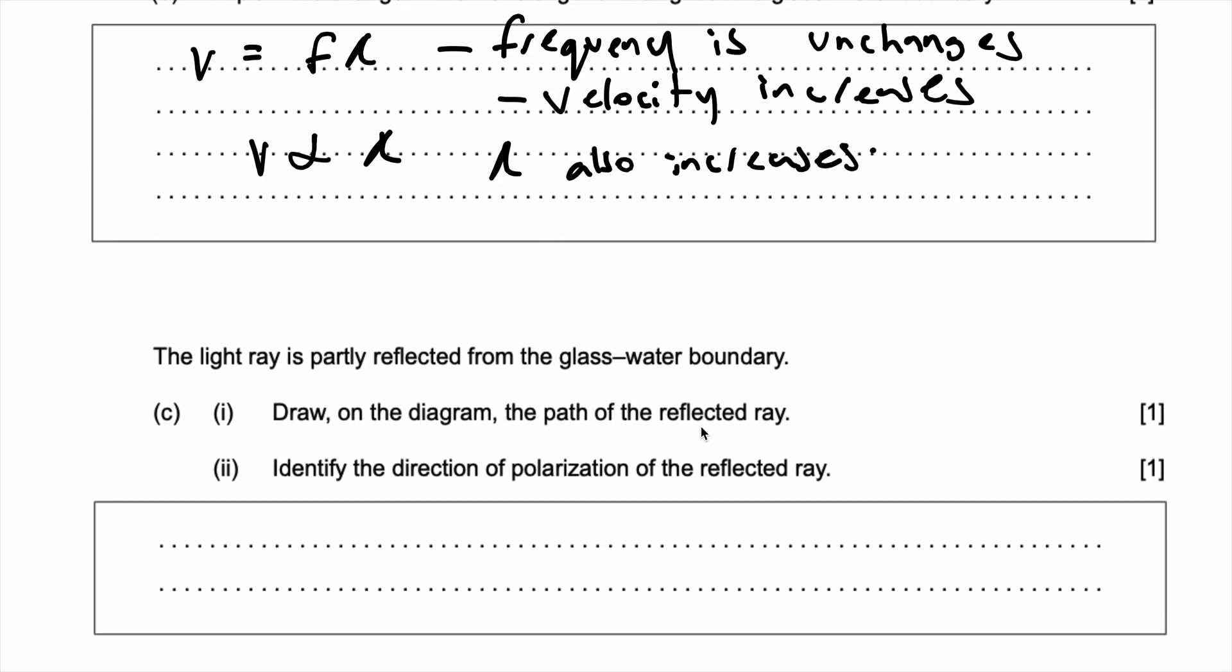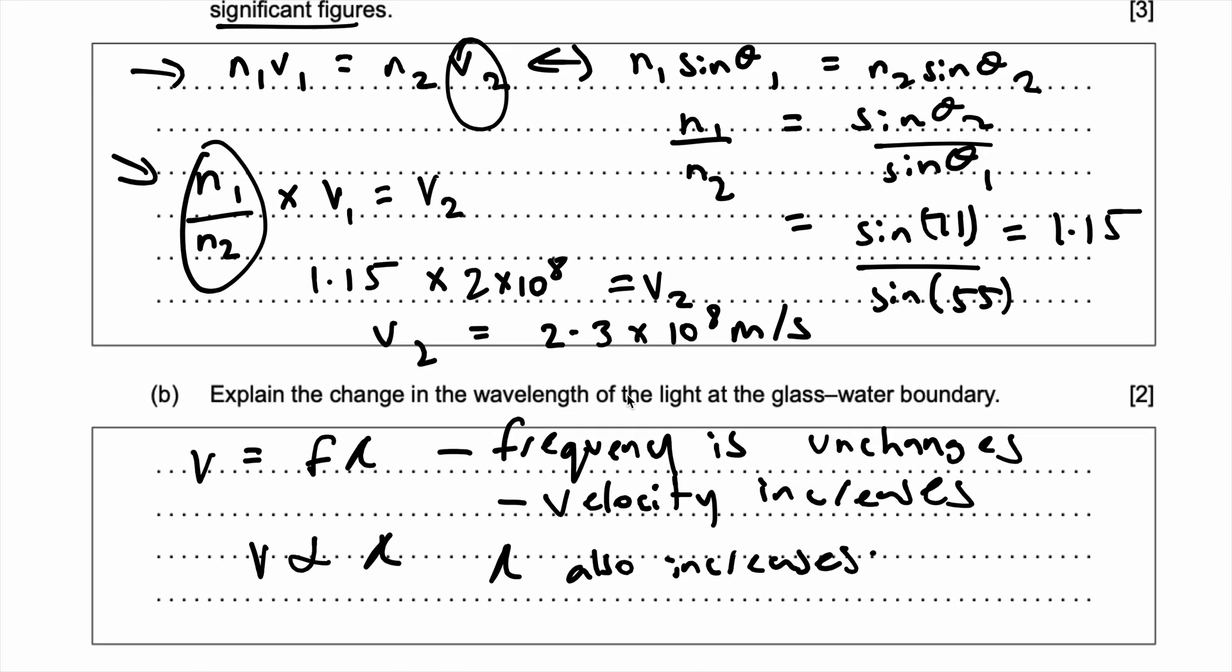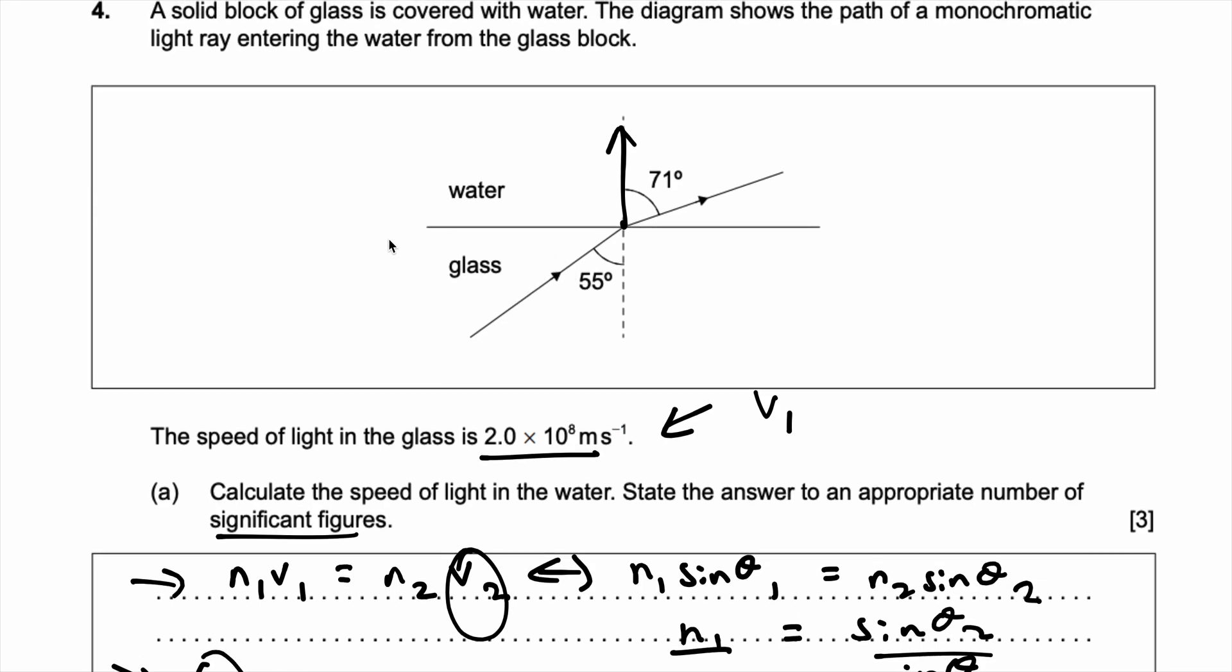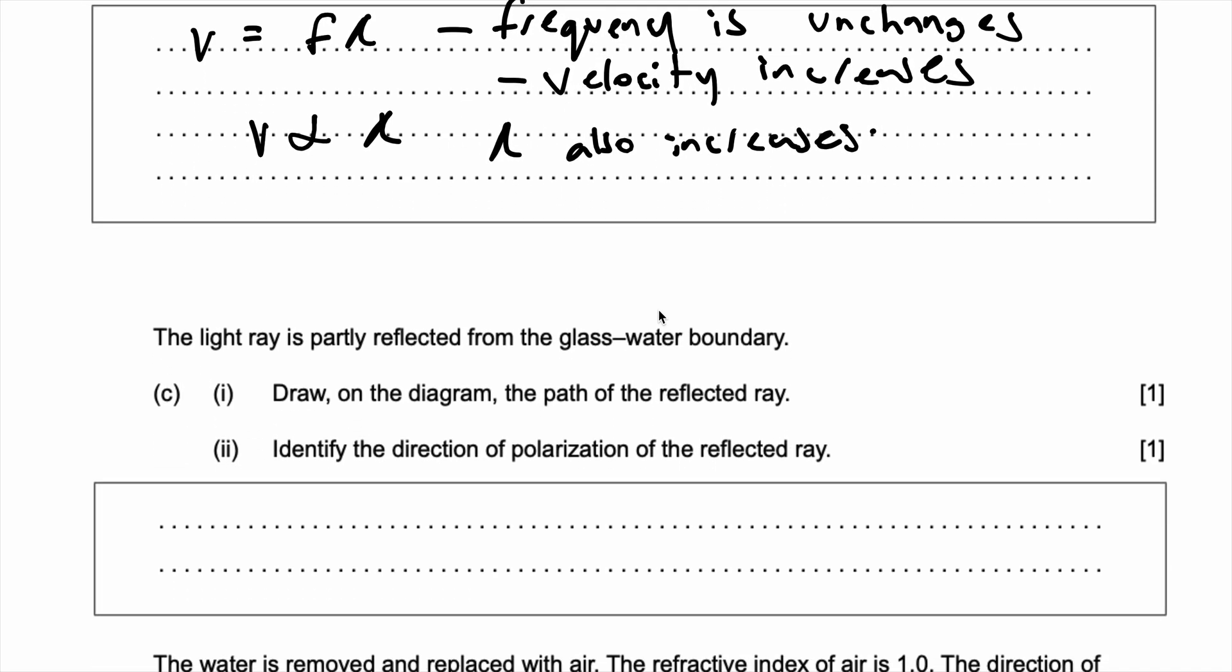Draw on the diagram the path of the reflected ray. So they're saying the light ray is partly reflected at the boundary. So if it were partly reflected at this boundary right there, how would the reflected path look? Well, it would just look something like that with the same angle of course, 55 degrees. See, it's partly reflected. So that's how it would look on the diagram.